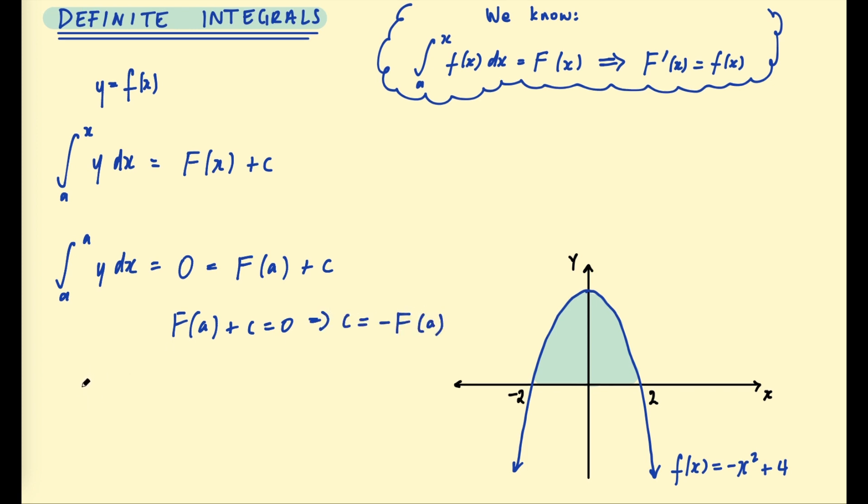And now we can ask for a specific area under the curve. Rather than a variable upper boundary we can say we want the area from a to b. So the area from a to b under f of x is equal to F of b subtract F of a. And this is the other part of the fundamental theorem of calculus that allows you to find areas under curves.